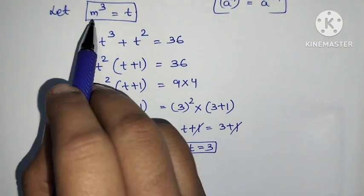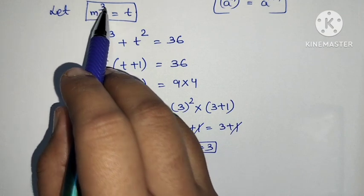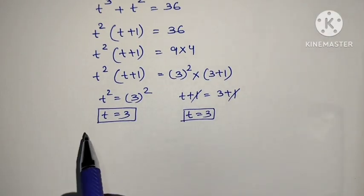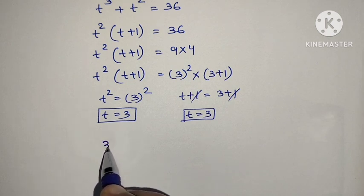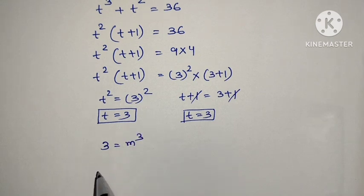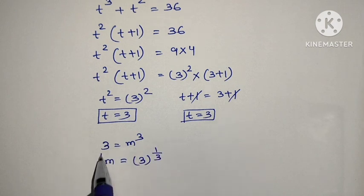But t is equal to m cubed. Then we find out the value of m. 3 is equal to m cubed. Then m is equal to 3 to the power 1 by 3. This is the value of m.